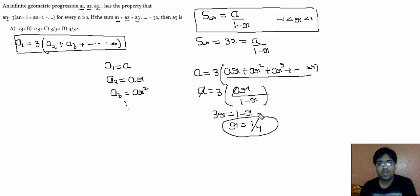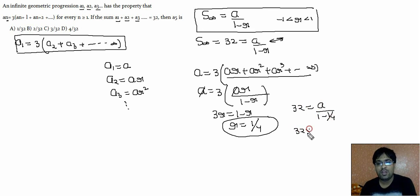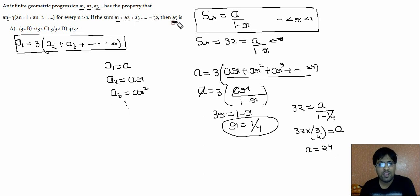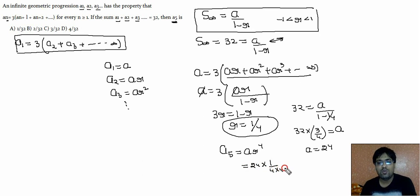Now putting r equal to 1/4 into the equation 32 equals a divided by (1 minus 1/4): 32 times (3/4) equals a, so a equals 24. To find a5, we use a5 equals a·r⁴, which is 24 times (1/4)⁴ — that is 24 times (1/256).